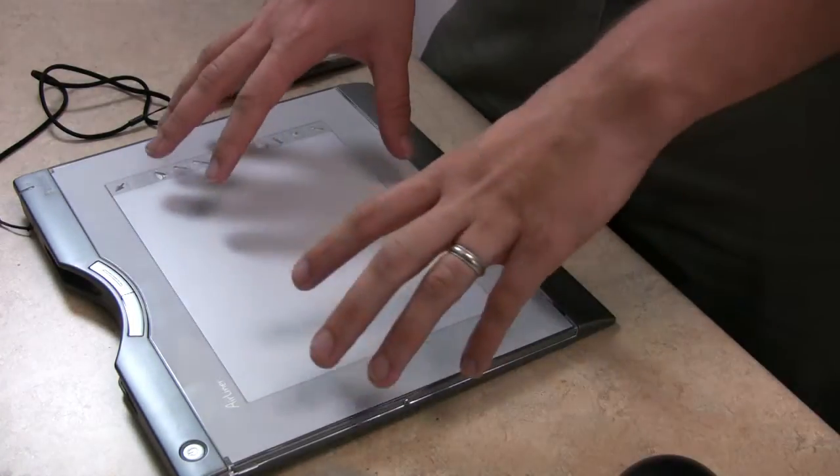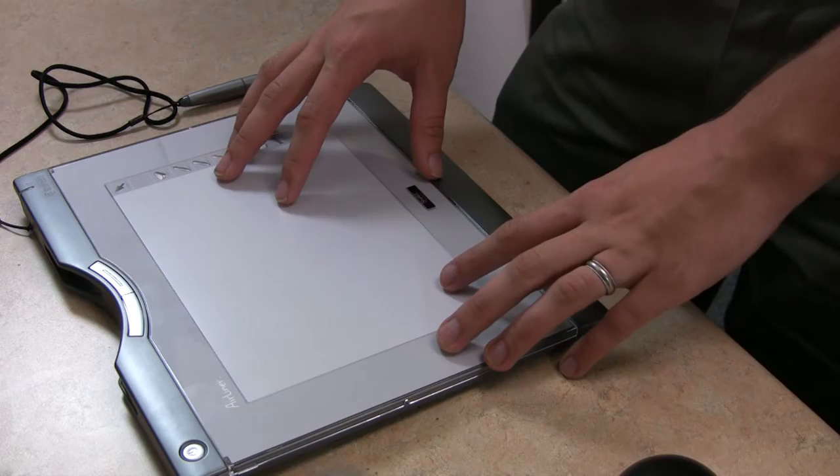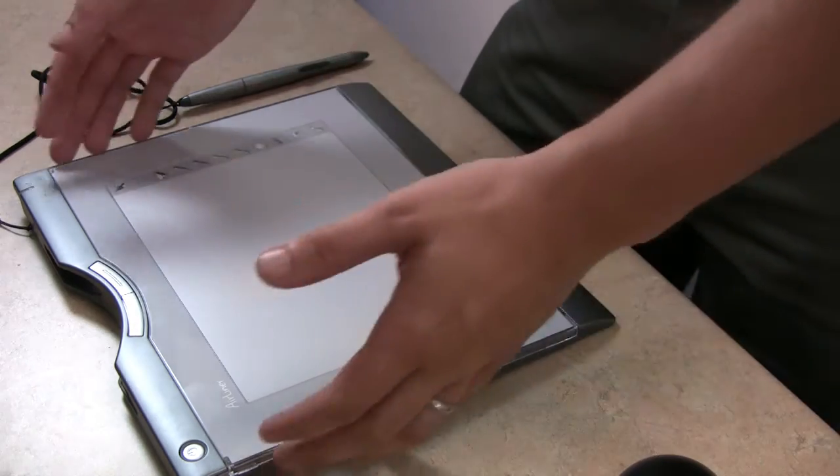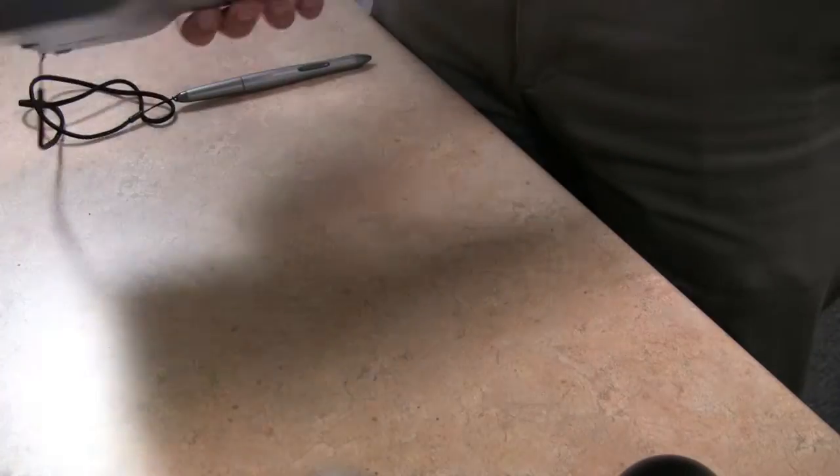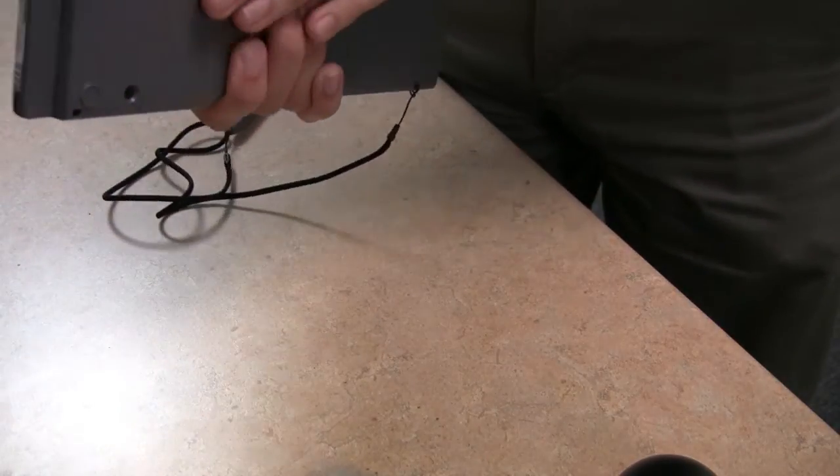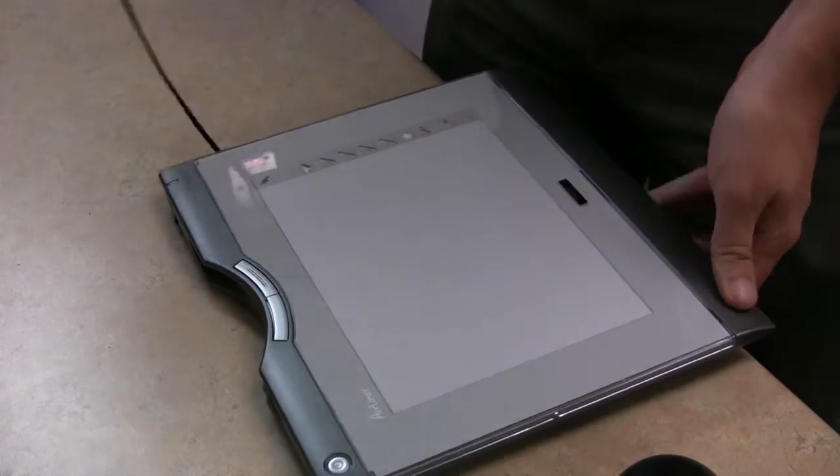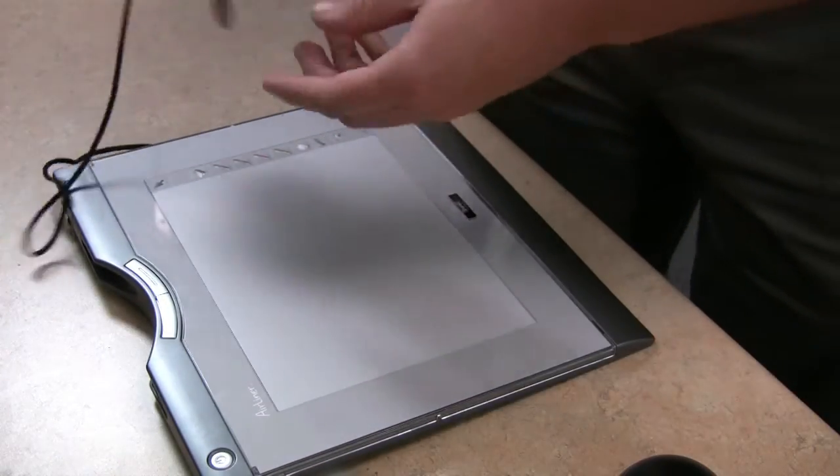We're going to start out by looking at a little bit of the physical hardware of the airliner. It is a flat slate, pretty thin, with just a small battery bump on the back and an attached stylus that goes along with it.